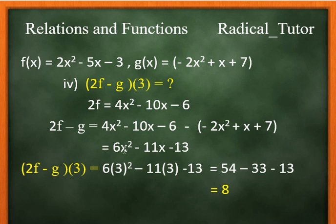Now to calculate 2f minus g at 3, substitute x equals 3. That's 6 times 3 squared minus 11 times 3 minus 13, which equals 54 minus 33 minus 13, equals 8.